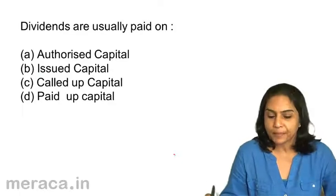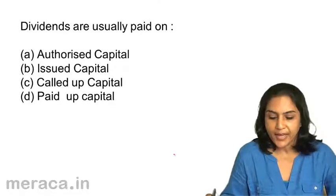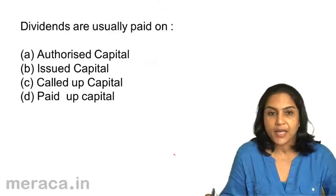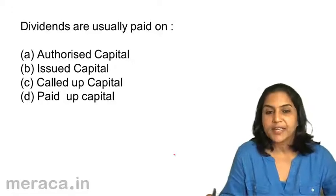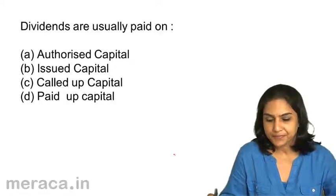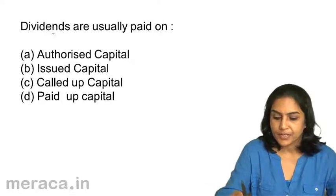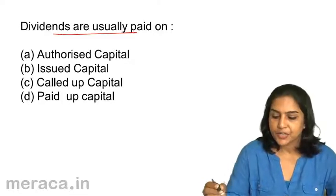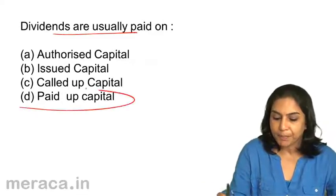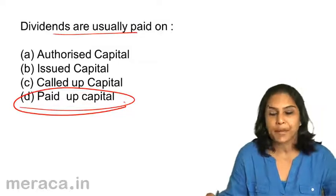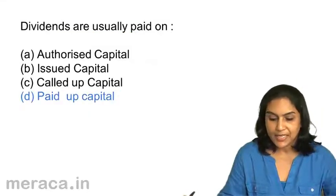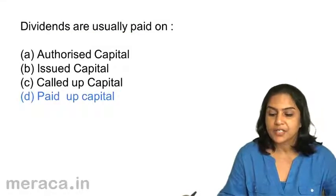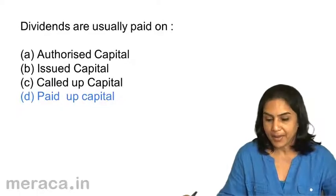Dividends are usually paid on: A. Authorized Capital. B. Issued Capital. C. Called Up Capital. D. Paid Up Capital. Dividends are usually paid on the paid-up capital. Answer is D. Dividends are usually paid on paid-up capital.